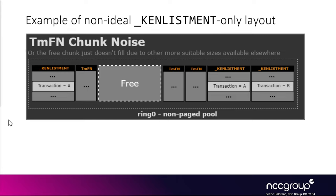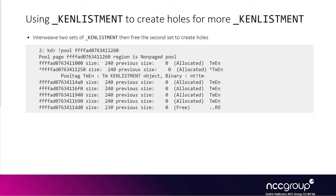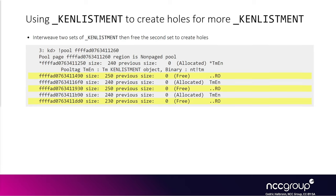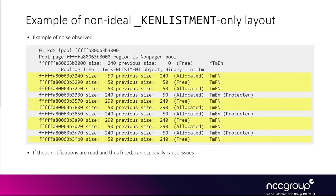Another possibility is the fake data gets allocated somewhere else entirely because after coalescing the chunk is no longer the best candidate. A WinDbg output example shows interleaved k-enlistments for transactions A and B — size 0x250 for transaction A — in a b a b pattern. All k-enlistments from transaction A are between holes, but when allocating enlistments for transaction R to fill those holes, tmfn notification structures appear in the holes, leaving small free chunks — which is not what we want.